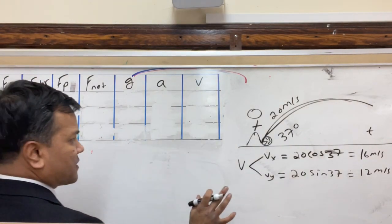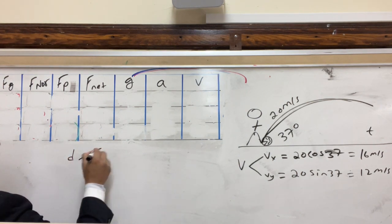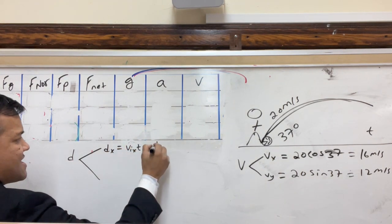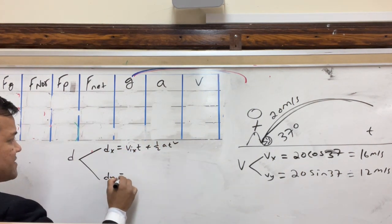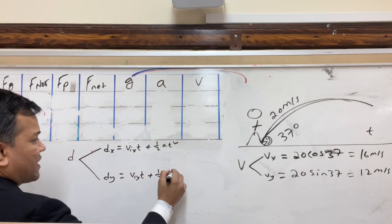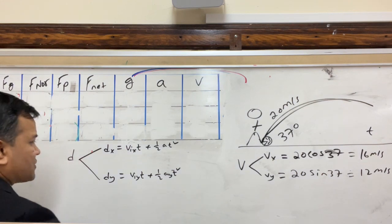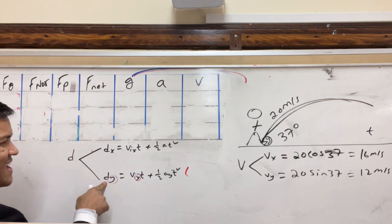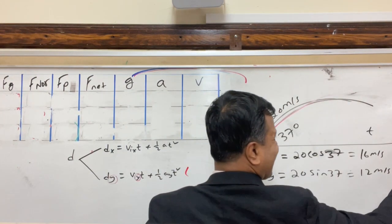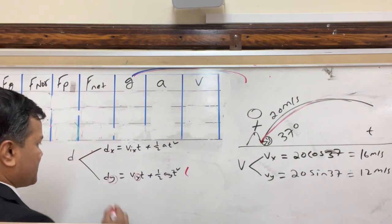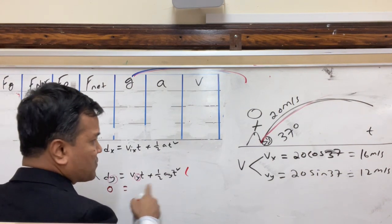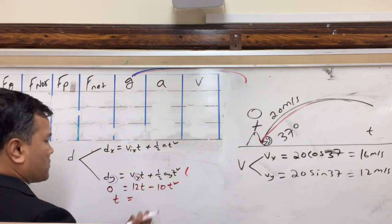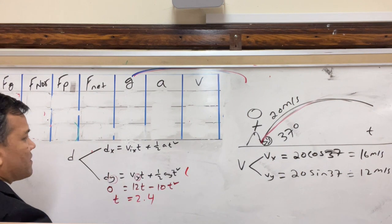Remember what you have to do: you have to first find the time. To find the time, you have to use two formulas. One is dx = Vix·t + ½ax·t² and the other one is dy = Viy·t + ½ay·t². Always remember what I told you a long time ago: the y gives you the time. The ball should be on the ground, that's right. That means dy = 0 = Vy·t. What is Vy? Of course, 12. So 0 = 12t - 5t². So t is of course 2.4 seconds.